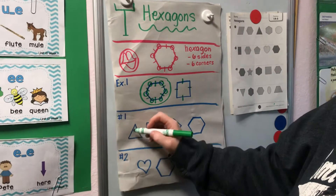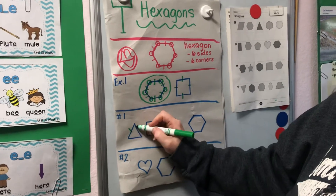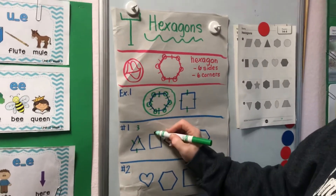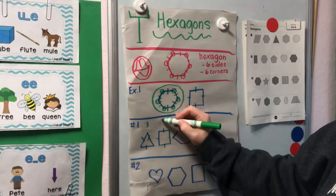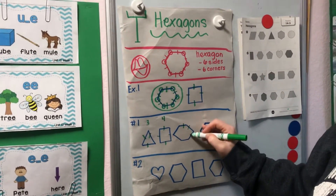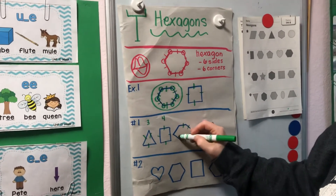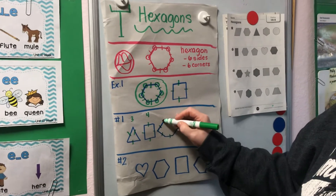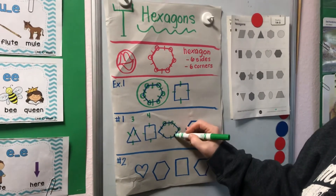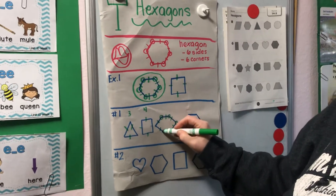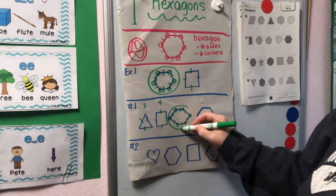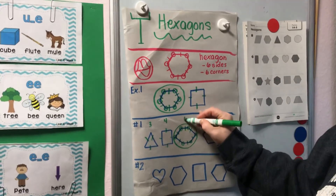Let's look at the next row. One, two, three — that's three sides. One, two, three, four — that's four sides. One, two, three, four, five, six. And let's check: one, two, three, four, five, six corners. Yep! That's a hexagon.